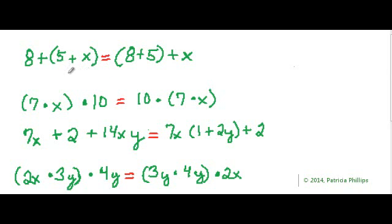At first, these two numbers, 5 and the variable x, were associated. And now, these other two numbers, 8 and 5, are associated instead. So what we're looking at is the associative property. There's nothing but addition and plus signs in between everything. Just plus, plus, plus. So this would be the associative property of addition.